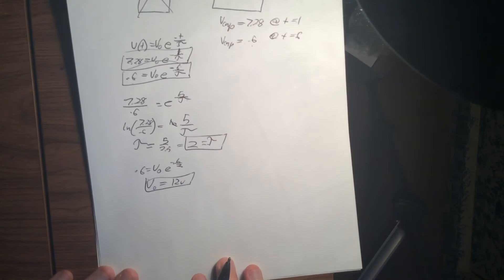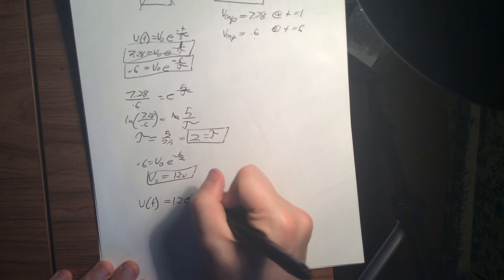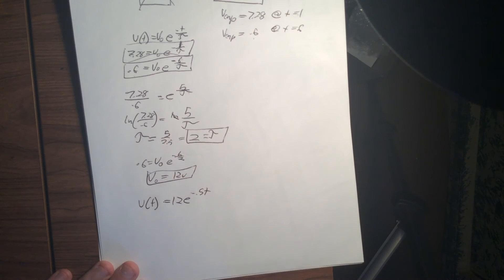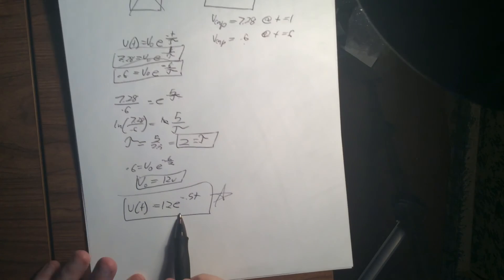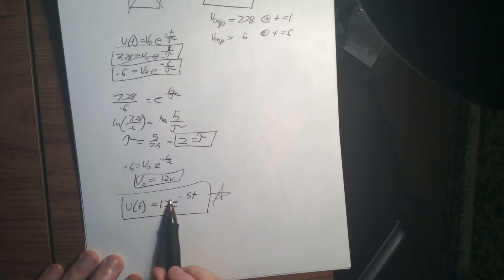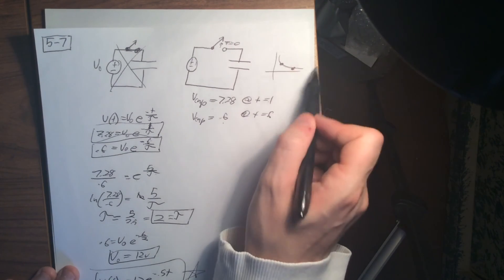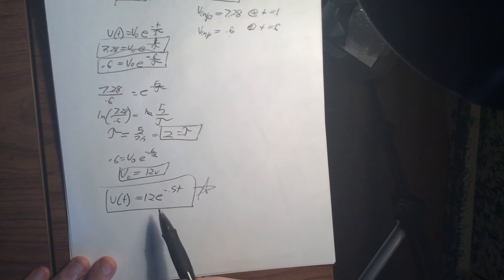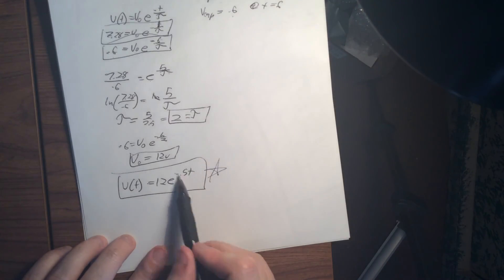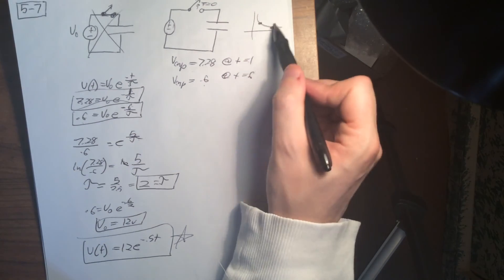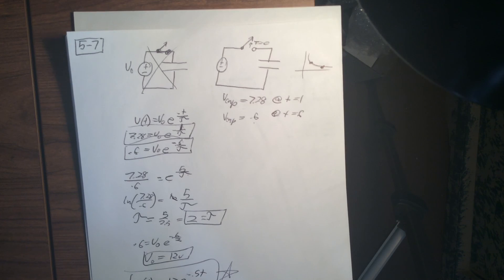So our total equation at the end of this one is going to be V of T equals 12 times e to the minus 0.5T. Cool. And that is our answer. And again, that's just saying our initial voltage is going to start, which the starting point is on here. Higher starting point means higher point in the curve. And then our negative exponential is going to be our curve going down, and that's going to be shaped by whatever this constant is here, is how that curve comes out. So essentially that's pretty straightforward. That's 5-7.